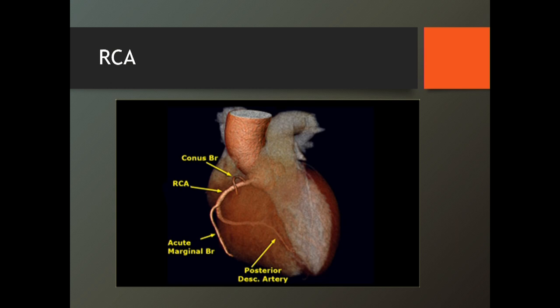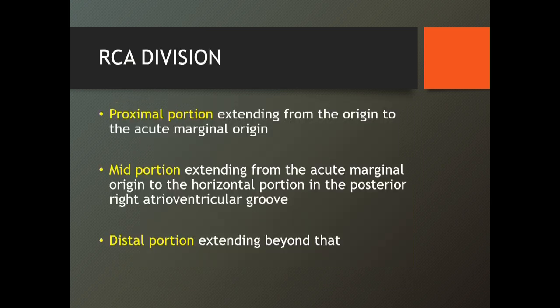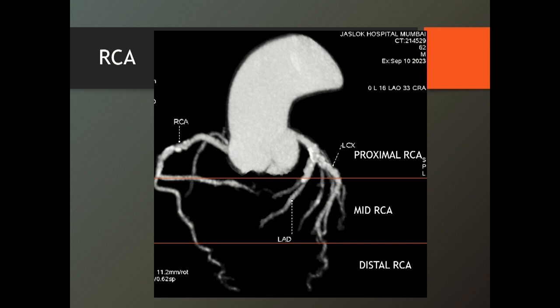This is how the RCA looks — that's the course of the RCA, that's the conus branch, that's the acute marginal branch, and that's the posterior descending — the PDA. The proximal portion extends from the origin to the acute marginal branch. The mid portion is from the acute marginal to the horizontal portion of the right atrioventricular groove. And the distal extends beyond that. So proximal, middle, and distal RCA — important because we describe this in the report.